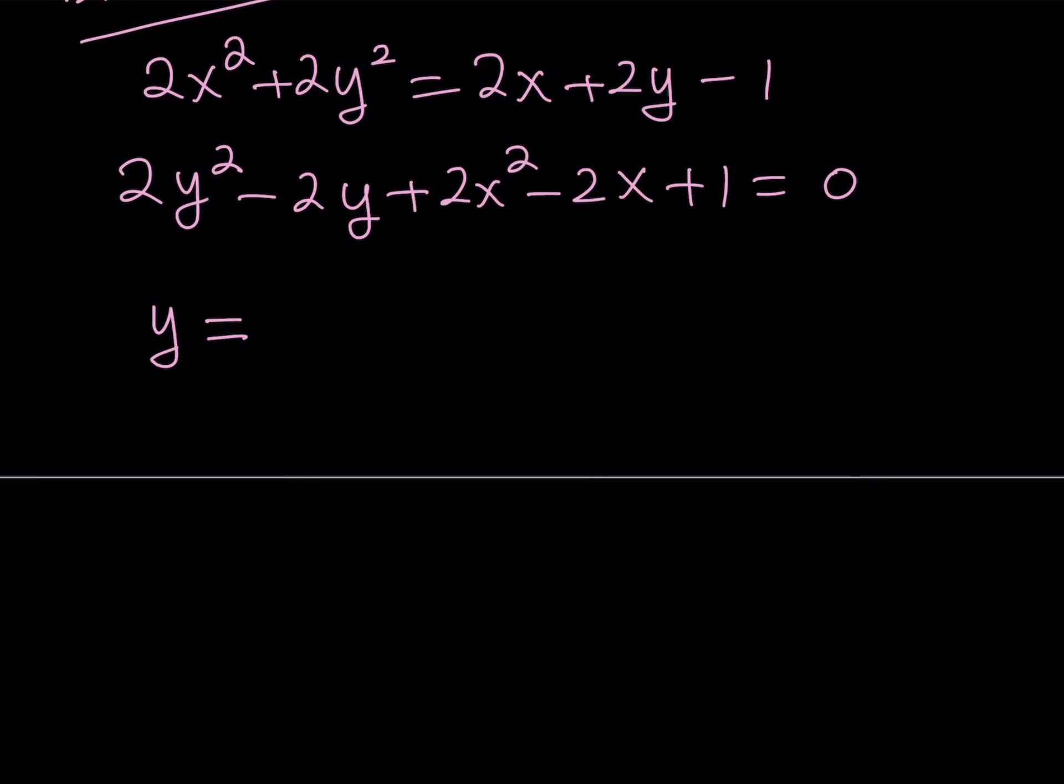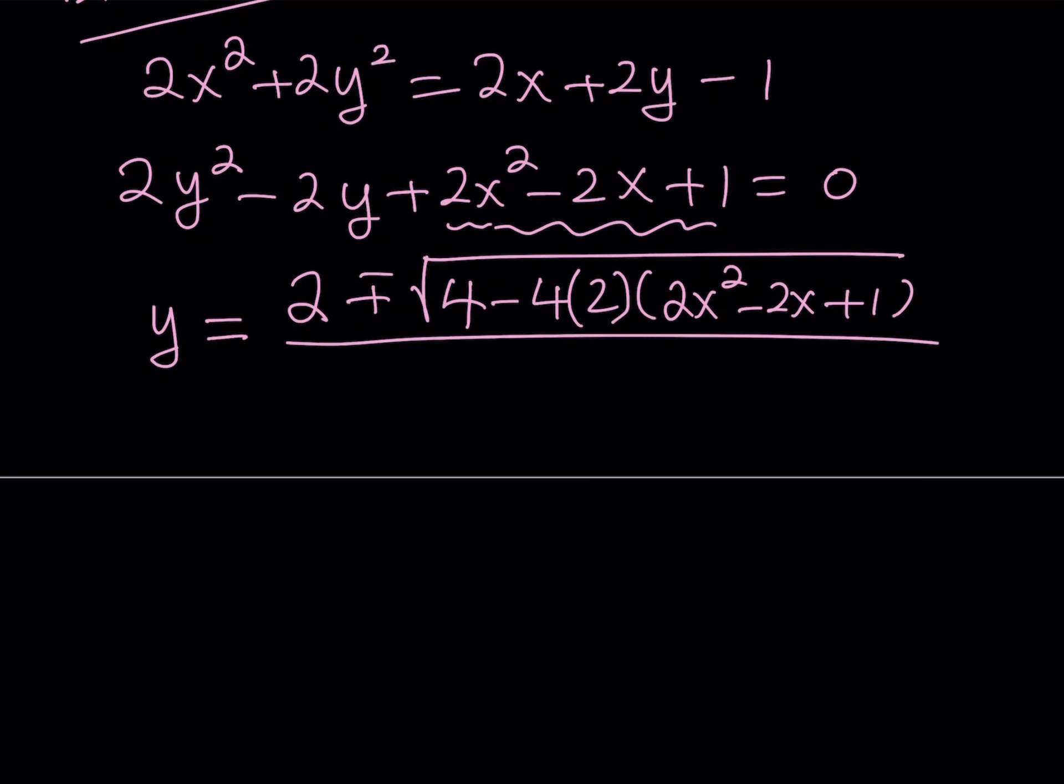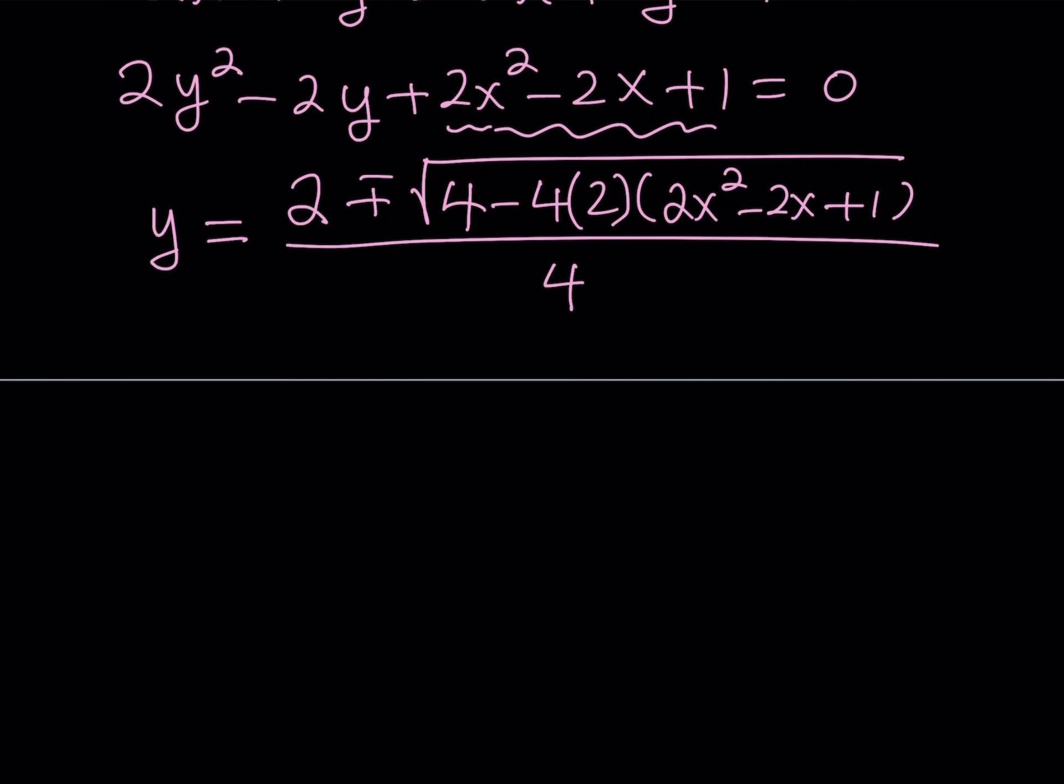We can write this as y equals negative b, 2, plus minus the square root of b squared minus 4 times a times c. c is the constant term. In this case, anything in terms of x will be considered constant because this is a quadratic in y. The whole thing divided by 4, which is 2 times a. Let's simplify this expression. 2 plus minus the square root of, I have an 8 here. I can just distribute the whole thing. Negative 8 will be multiplied by 2x squared. That's going to give me 4 minus 16x squared plus 16x minus 8.